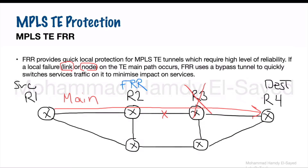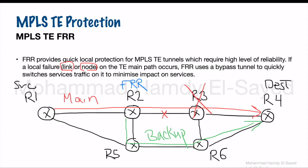R2 can be configured to protect the link between R2 and R3, or to protect the entire node R3. If R3 experiences a complete failure, the main path of the traffic engineering tunnel will not be available. R2 can then be configured to reroute traffic via a backup path through R5, R6, and R4 to reach the destination. This way, traffic disruption is minimized.